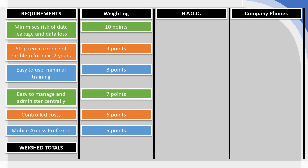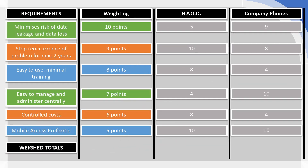We can apply different scores to each option for each requirement — this is where the qualitative element really comes in, because even though it looks mathematical, it is based on qualitative judgment. For example, we've assessed that 'Bring Your Own Device,' because it uses personal devices, is not particularly good at minimizing data loss and data leakage, so we've given it a score of five. But for company phones, while we can't completely eliminate the risk, it's greatly reduced, so we give that nine. We score all requirements out of 10 for each option. However, this raw score alone doesn't give us a weighted understanding.